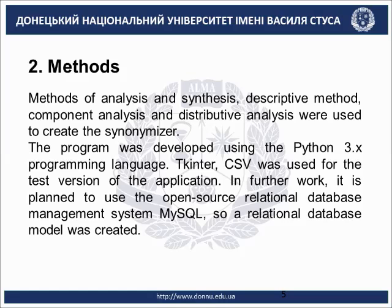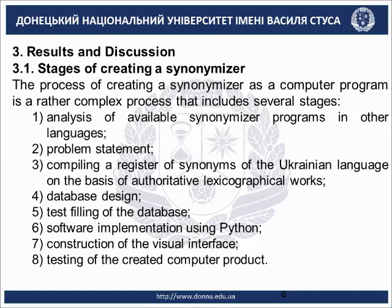Results and discussion. The stages of creating a synonymizer. The process of creating a synonymizer as a computer program is a rather complex process that includes several stages: first, analysis of available synonymizer programs in other languages; second, problem statement; third, compiling the register of synonyms in the Ukrainian language on the basis of authoritative lexicographical works; fourth, database design; fifth, test filling of the database; sixth, software implementation using Python; and seventh, construction of the visual interface.